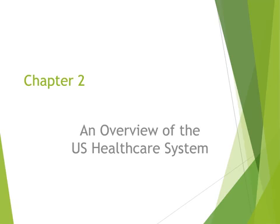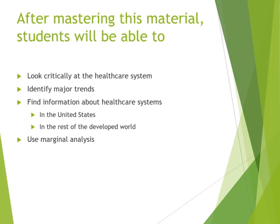Welcome to chapter two, an overview of the U.S. healthcare system. After reading and going over the material in chapter two, you should be able to look critically at the healthcare system, identify major trends within the U.S. healthcare system, find information about health systems not only in the United States but the rest of the developed world, and also use marginal analysis.